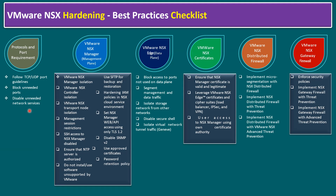VMware NSX has a main component called NSX Manager, which is the management plane. Under the management plane checklist: NSX Manager isolation, NSX Controller isolation, NSX transport node isolation, management session restrictions, and SSH access to the NSX Manager — this is recommended to disable. Whenever access is needed, get exception approval for a limited period, enable it, complete the activity, then disable again.